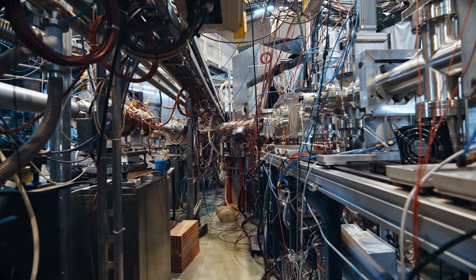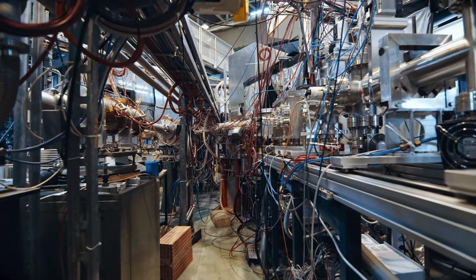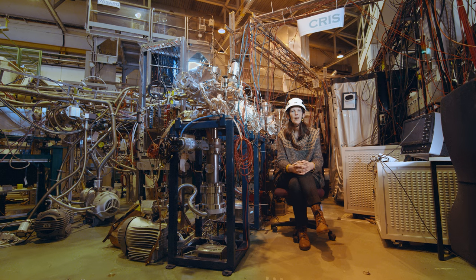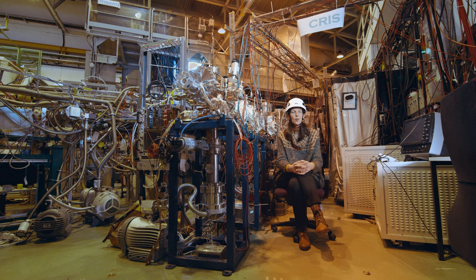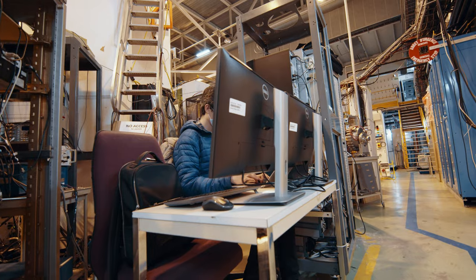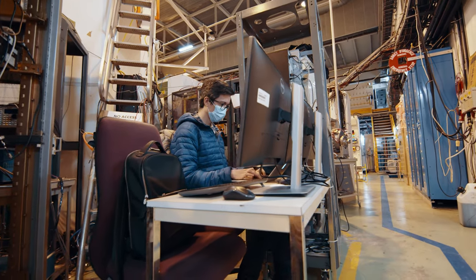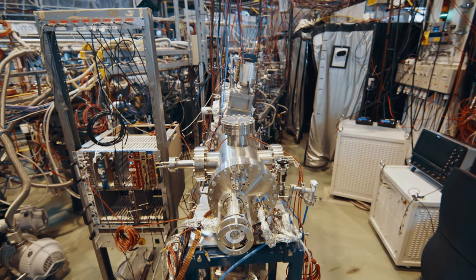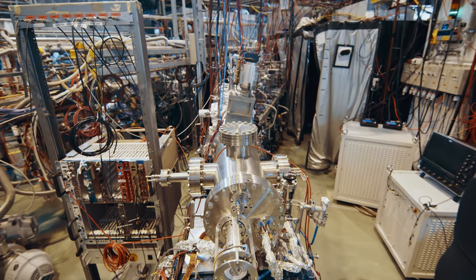Once we have produced the potassium isotopes, they go through the mass separator and are sent into the CRIS beam line. We overlap the isotopes with lasers, and the goal is that we first neutralize the ions that come in, so we have them in their atomic ground state.